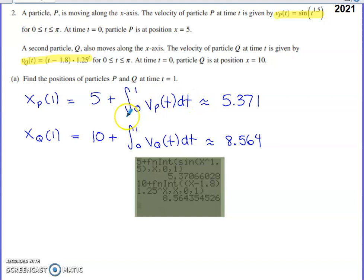We're asked to find the positions of particles P and Q at time one. So you've probably done quite a few problems similar to this if you've practiced enough leading up to your AP exam. We want to find the x-coordinate of particle P at time one. Well, we're going to have to base this calculation off of the x-coordinate that we know, which is the x-coordinate of five, which occurs at time zero.